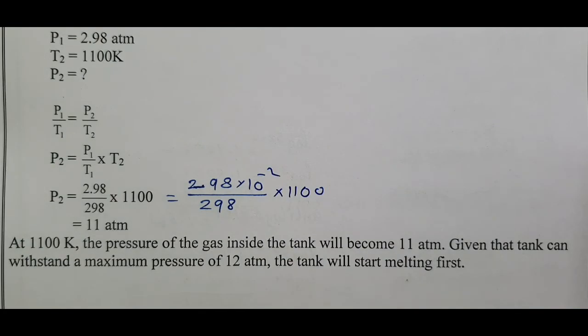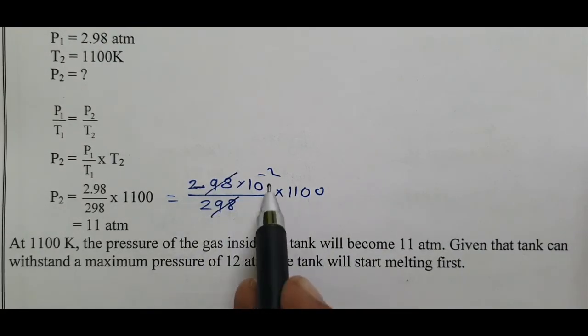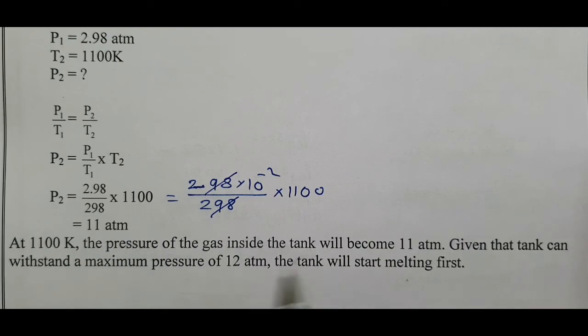298 and 298 get cancelled. 1100 times 10 to the power minus 2 equals 11 atm.